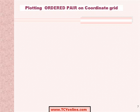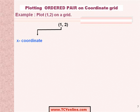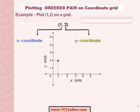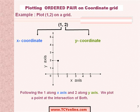We shall understand the concept of plotting an ordered pair on a coordinate grid using an example. We would plot (1, 2) on the grid. We know that (1, 2) means 1 on the x-coordinate and 2 on the y-coordinate. Therefore, on this grid, we would follow 1 along the x-axis and 2 along the y-axis, and on extending two straight lines, we find that these lines meet at the point shown.